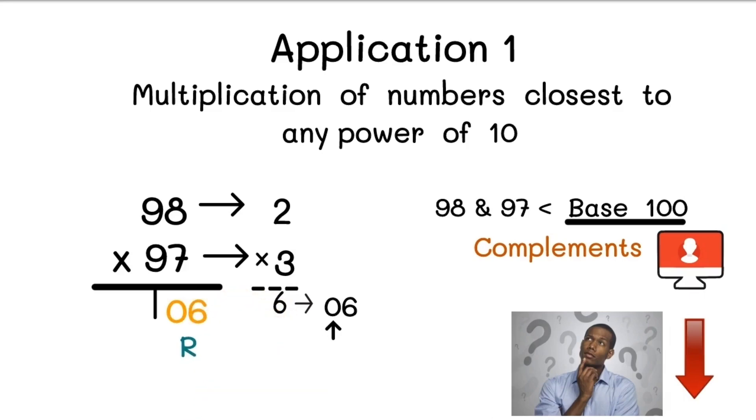Now let us find out the left part. For the left part, we need to take the cross subtraction. So we will write 98 minus 3 equals 95, or 97 minus 2 equals 95. Both answers are same.